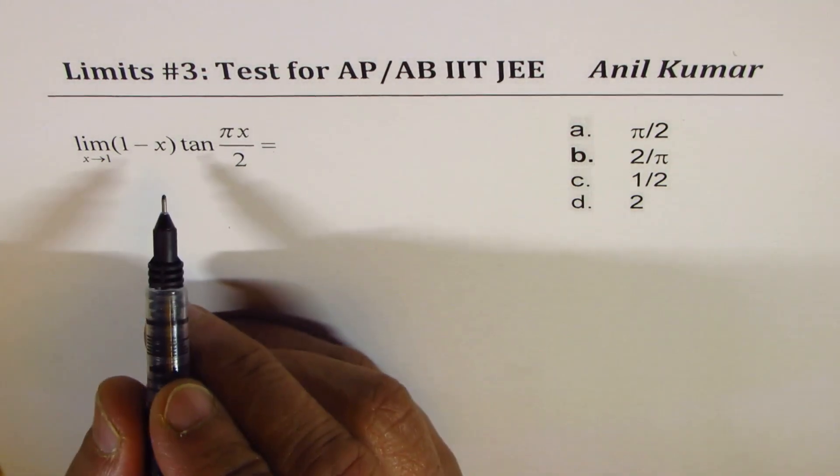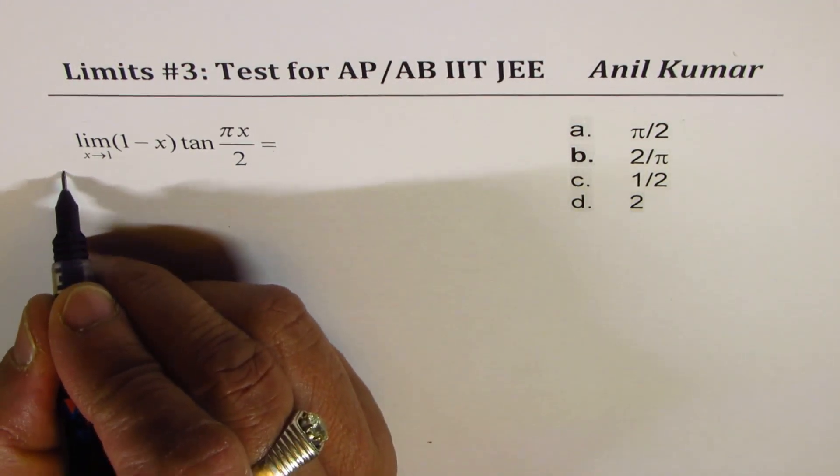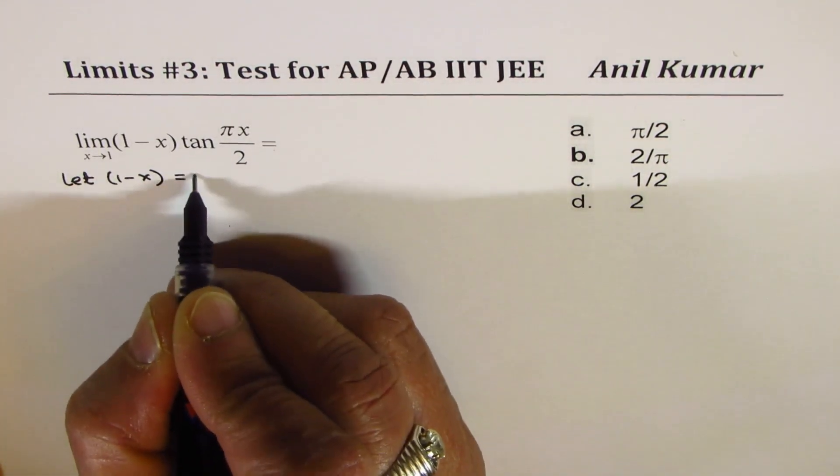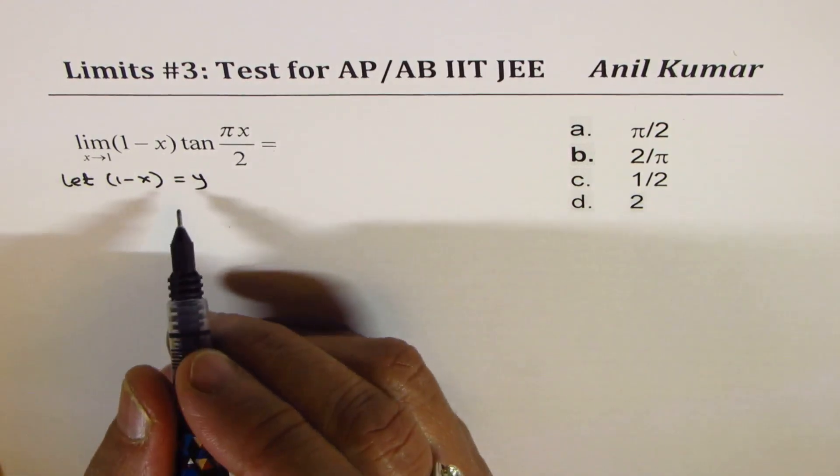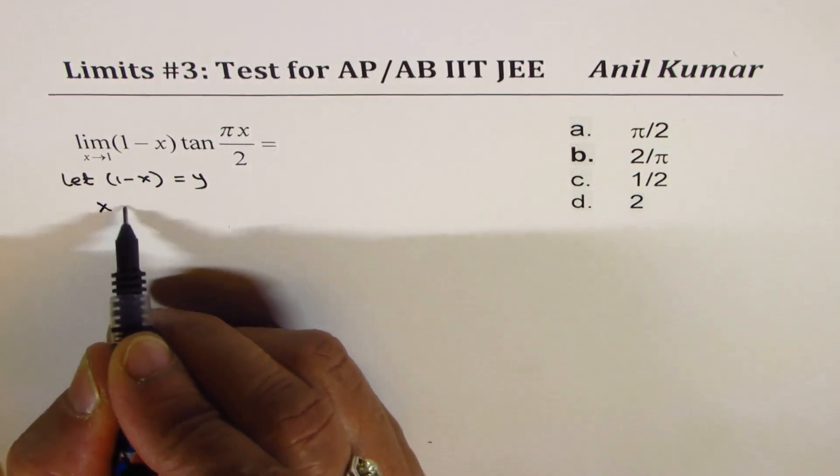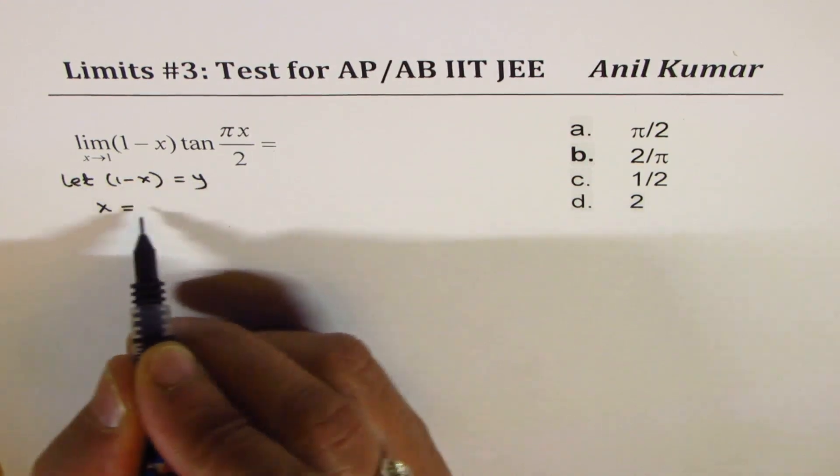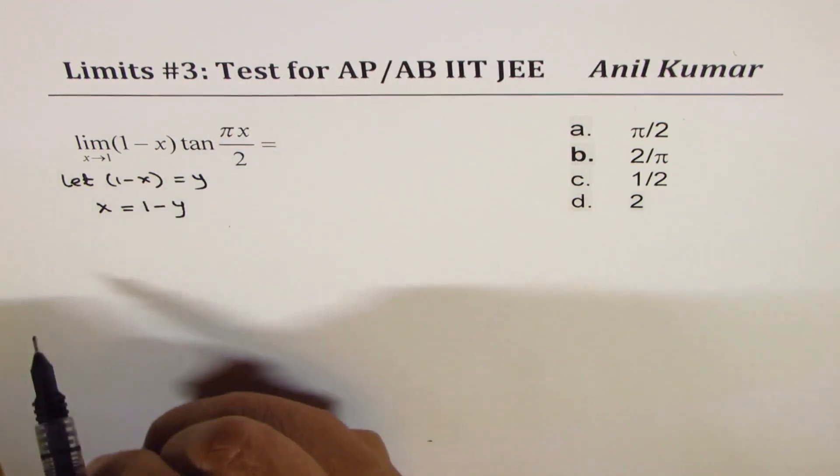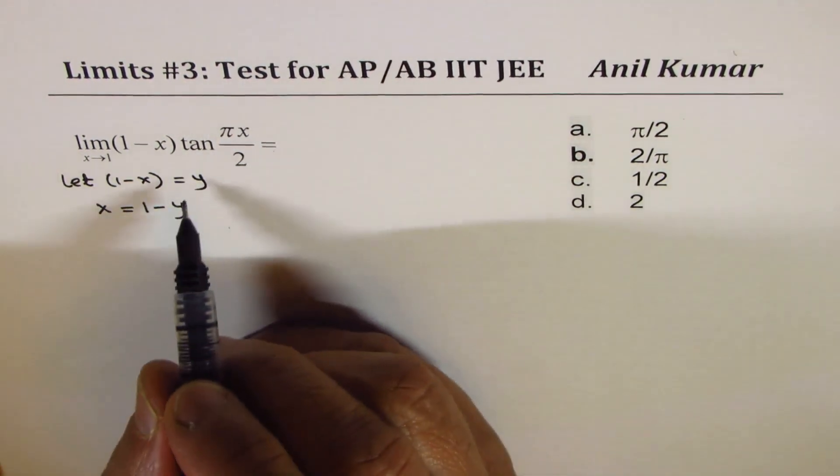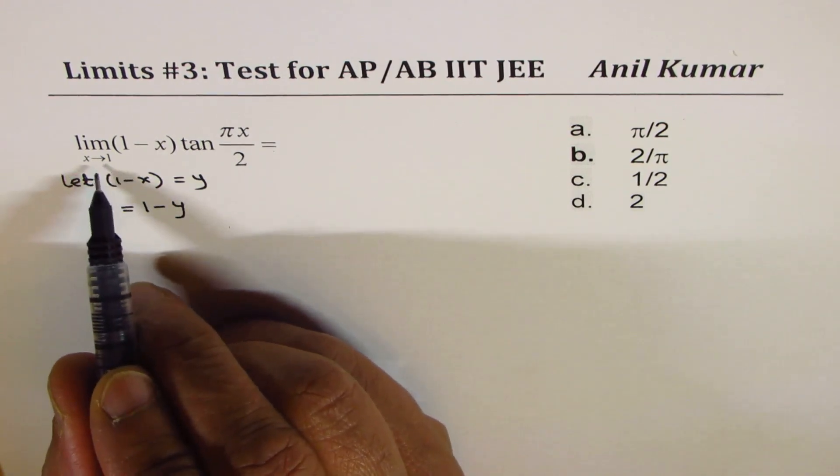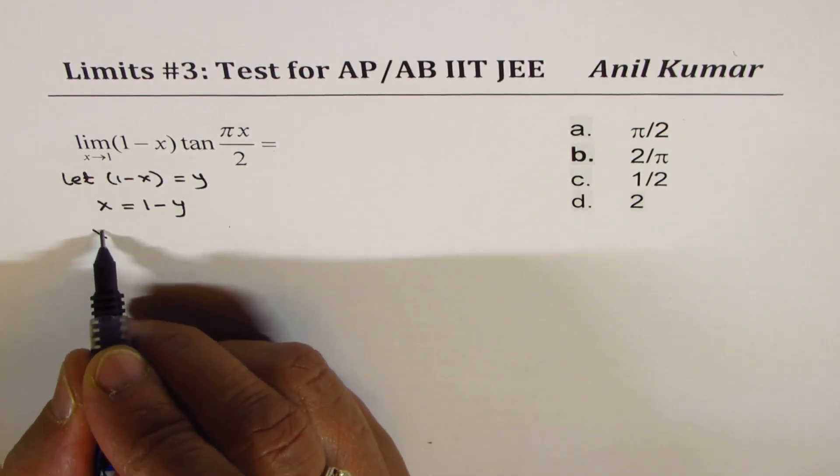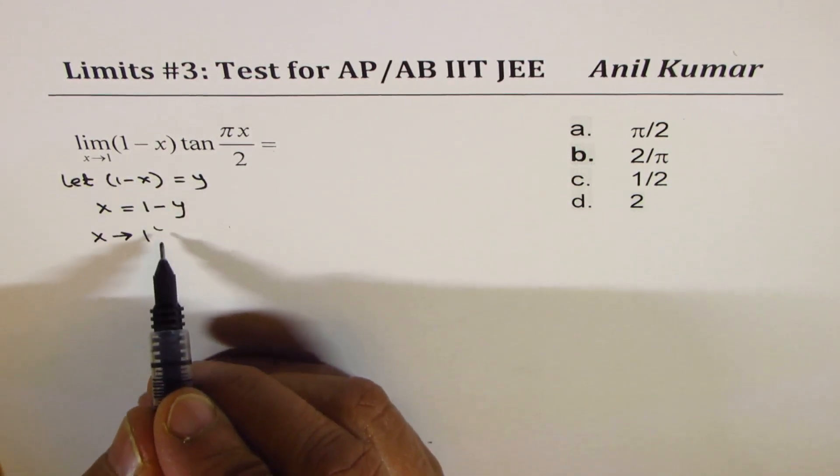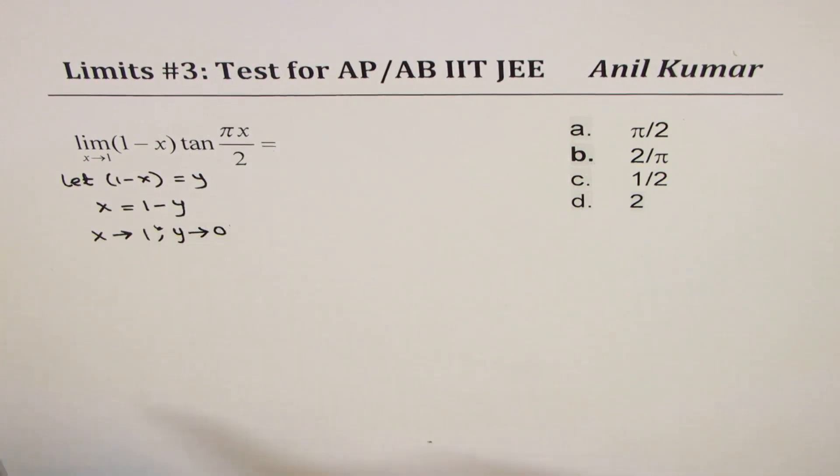Now to solve this, let's do a substitution. Let 1 minus x be equal to y. So in that case, x equals 1 minus y. The other thing is that as x approaches 1, y will be 1 minus 1 which is 0, so y approaches 0.